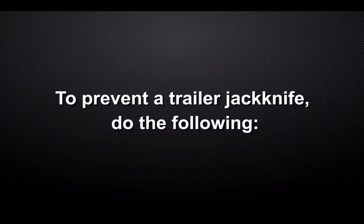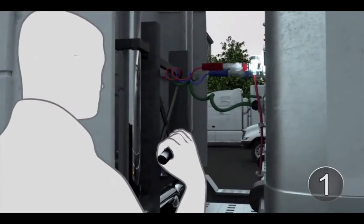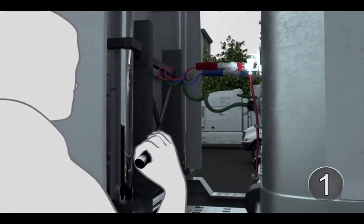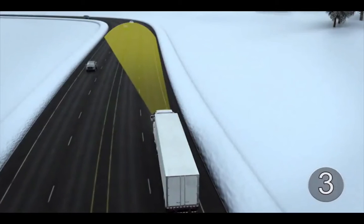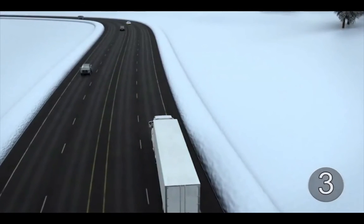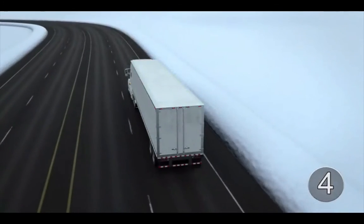To prevent a trailer jackknife, do the following: 1. During your pre-trip inspection, inspect your air system and check brake adjustments. 2. Adjust your speed for conditions. 3. Look at least a quarter mile ahead. 4. Avoid braking in curves.